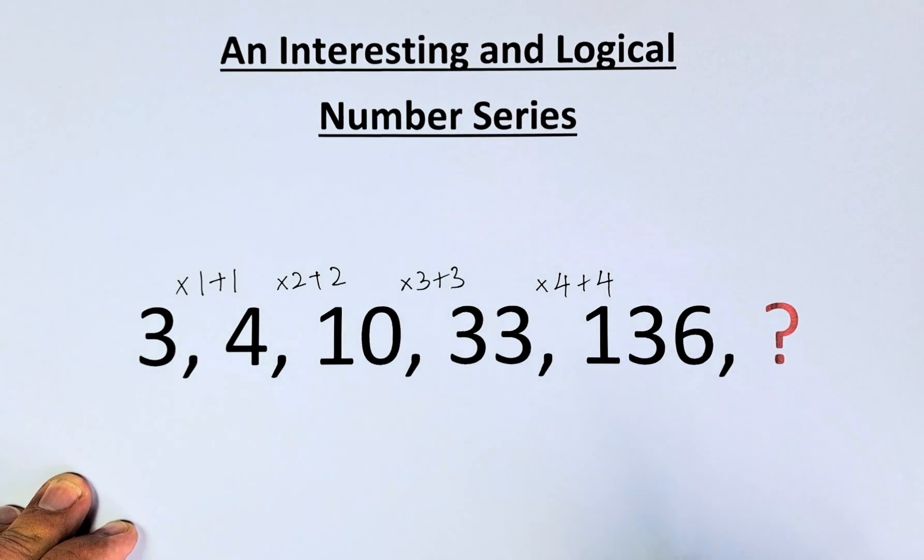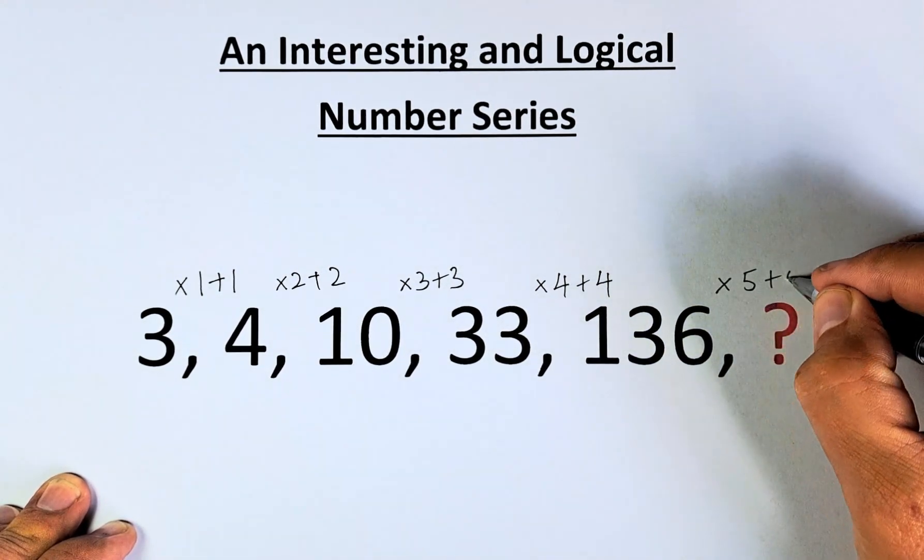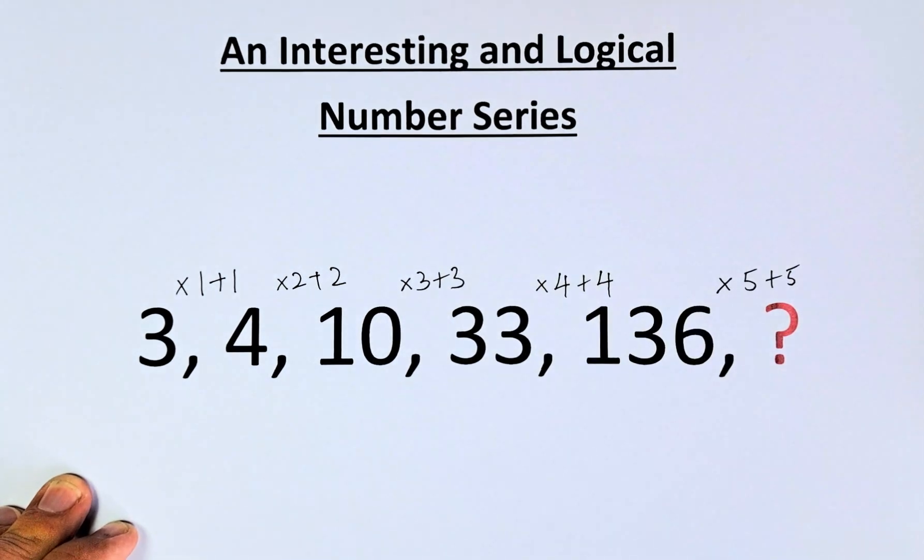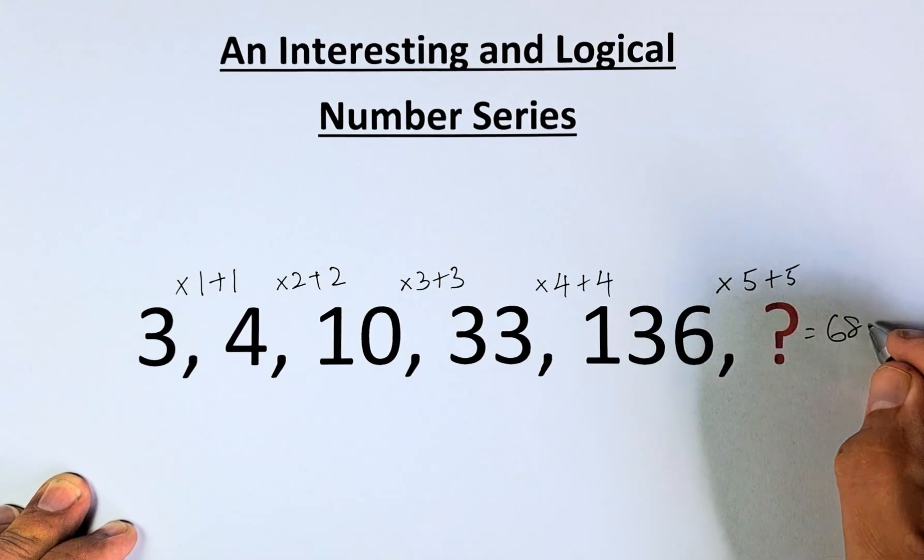So from 136 to the question mark, what we're going to do is multiply by 5 and plus 5. 136 times 5 is 680. And you're going to add 5. The answer is going to be 685.